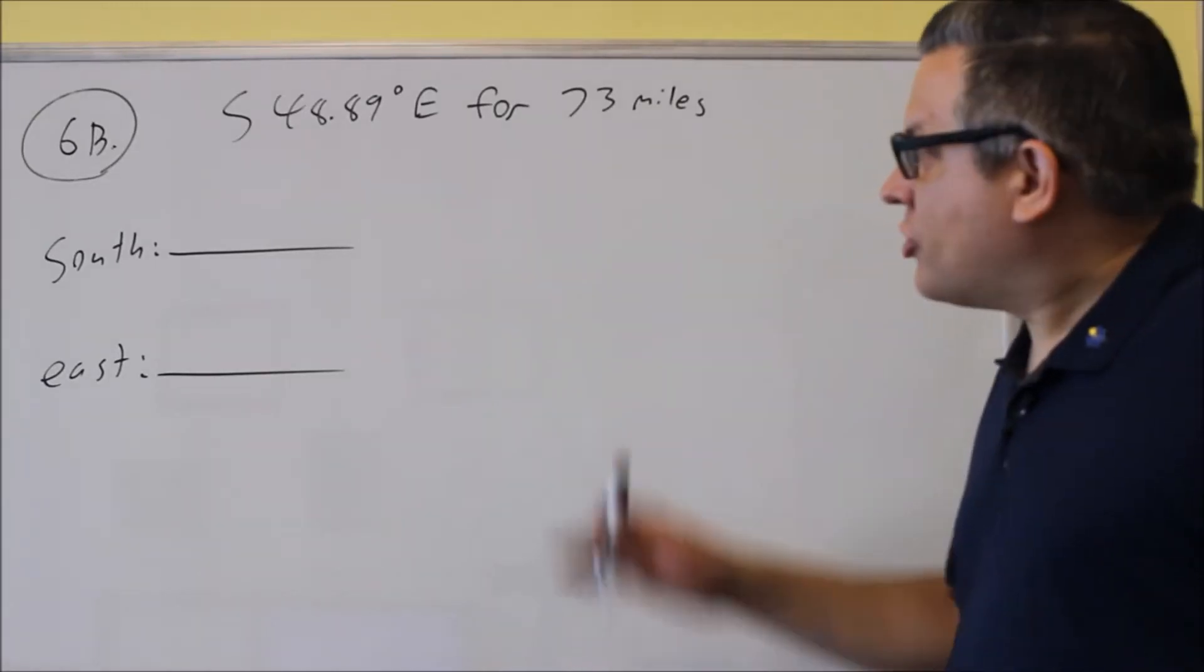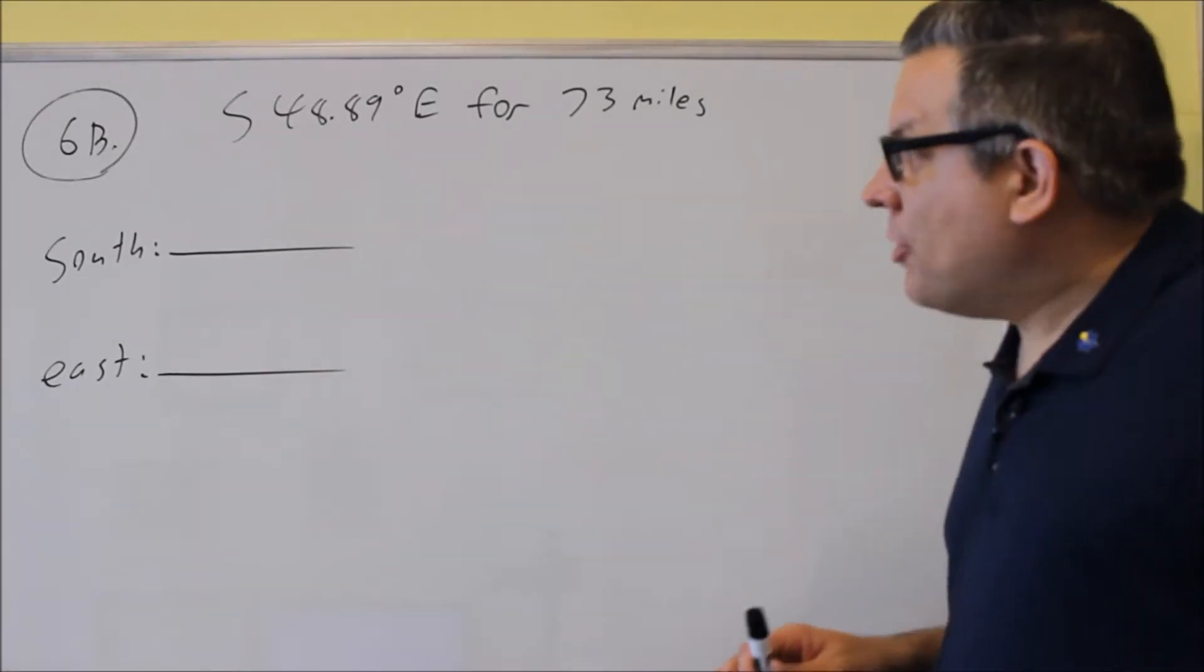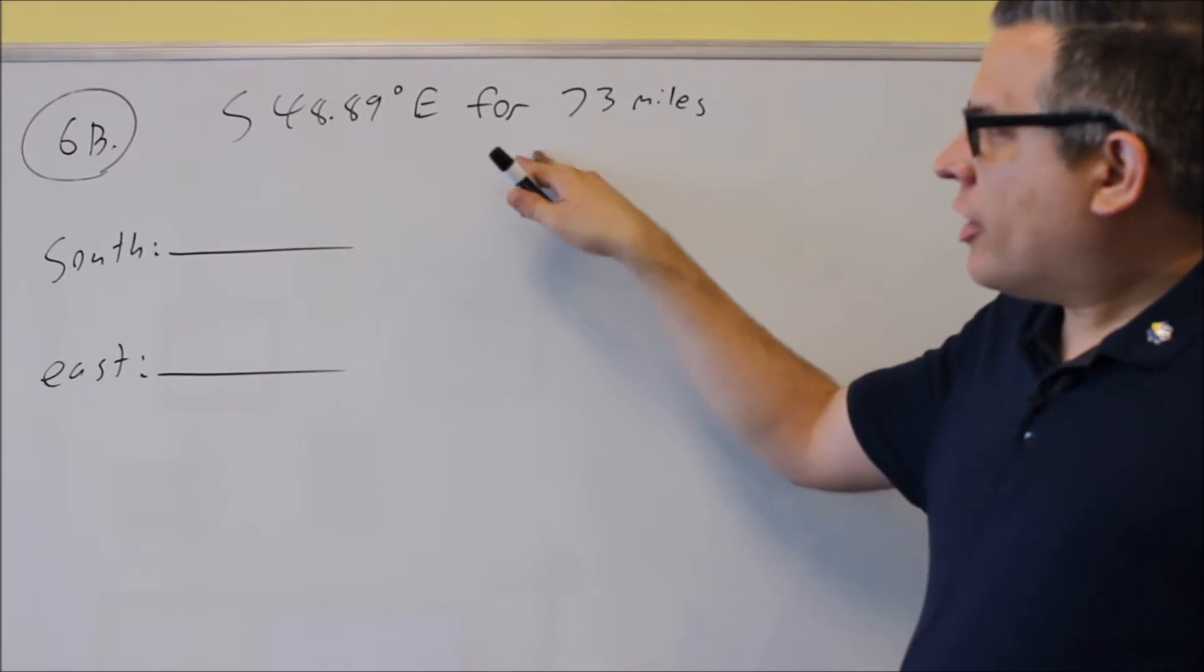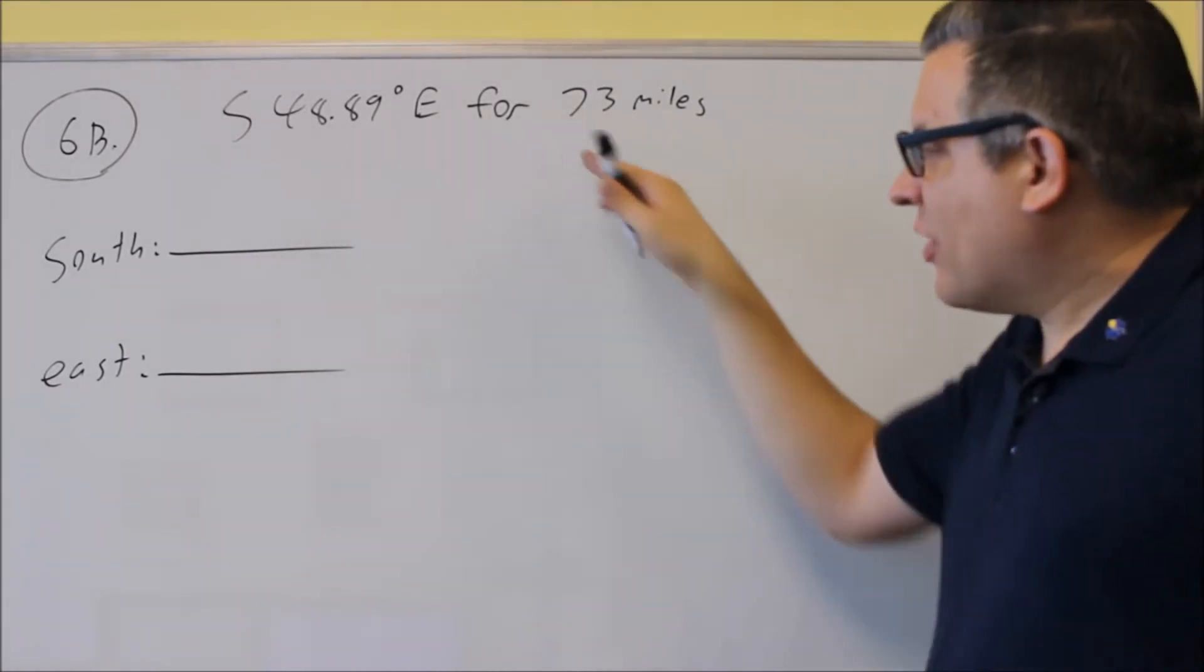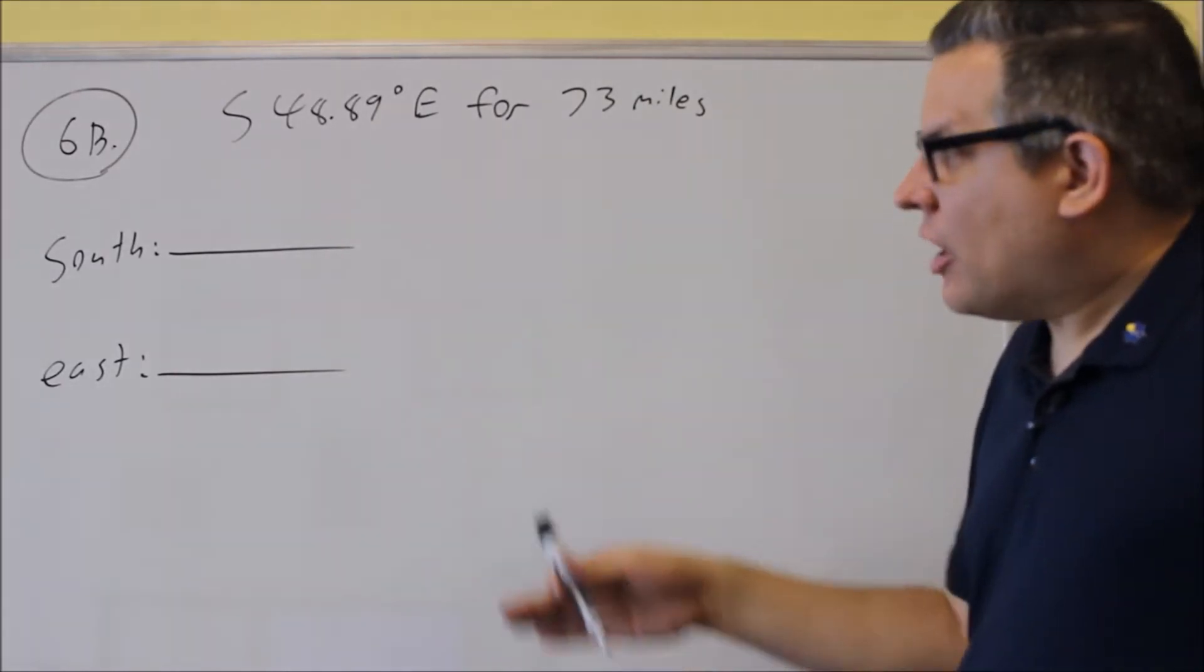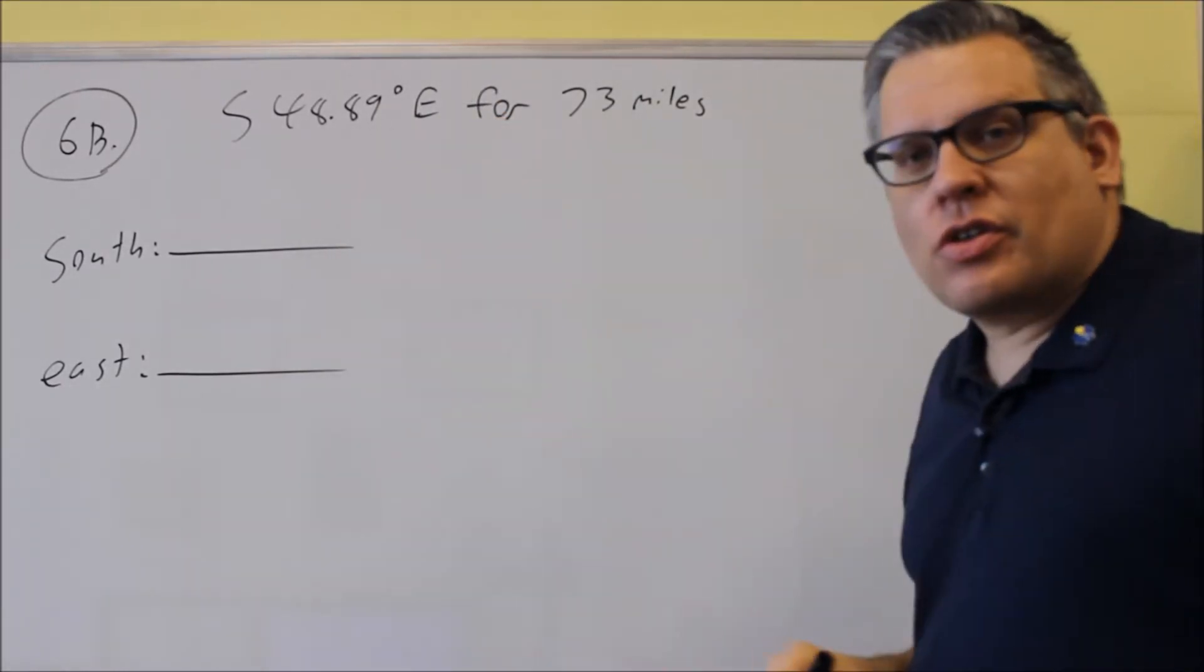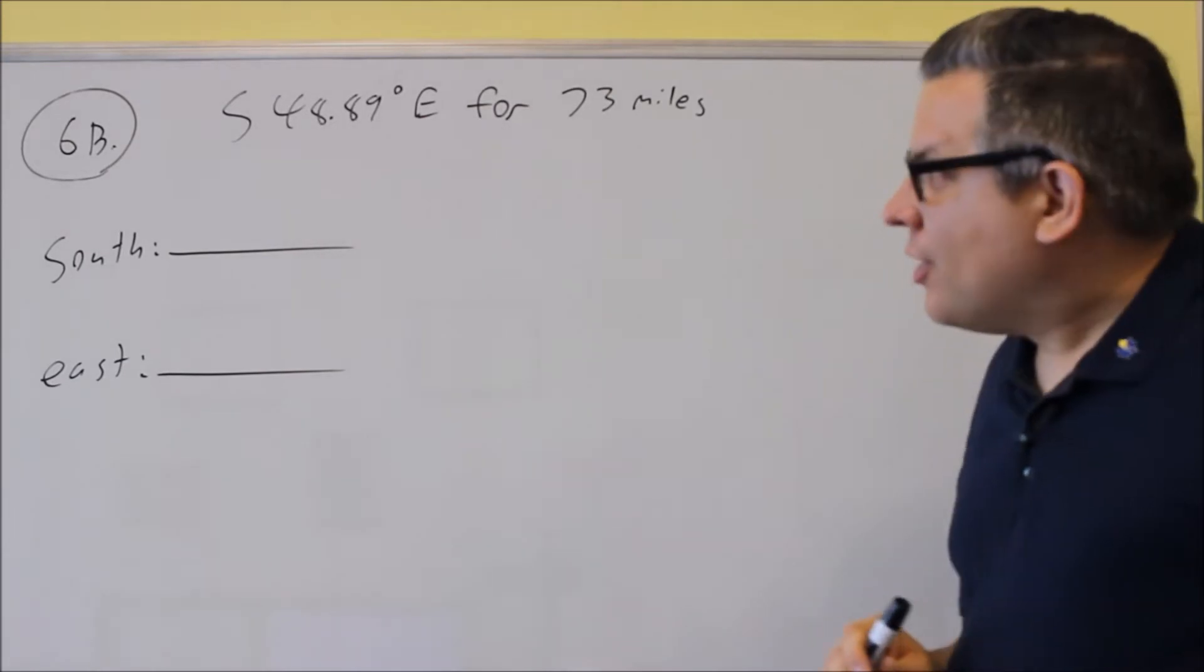Okay, 6B is a little bit different. We're still dealing with bearings, but this time we're given that a semi is going on that particular bearing for 73 miles. After it goes 73 miles, how far south and east is it from its original starting point?